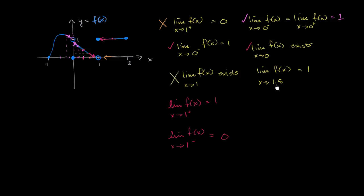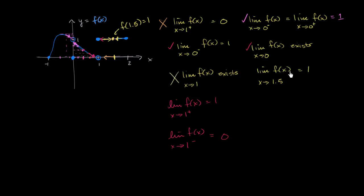Finally, the limit of f of x as x approaches 1.5 equals 1. Unlike the previous cases, this is a plain vanilla continuous point. When x = 1.5, f of 1.5 = 1, which is the point (1.5, 1). Approaching from the left or right, the limit is 1. The graph is continuous there, so the limit equals the function value. You don't need the function to be undefined to find a limit. This statement is true.